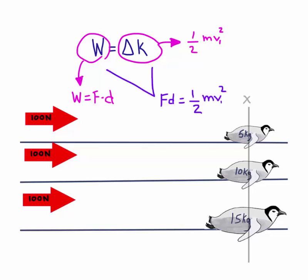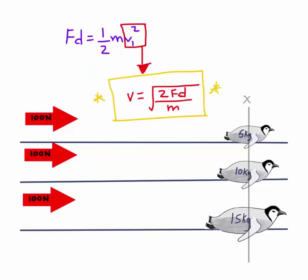And since we have already established that all penguins have the same kinetic energy, we can say that work is equal to kinetic energy. Or f times d is equal to half mv squared. And then we solve for velocity.